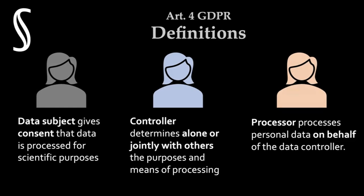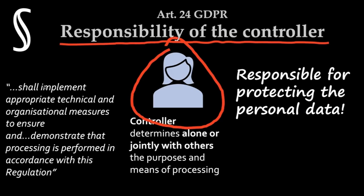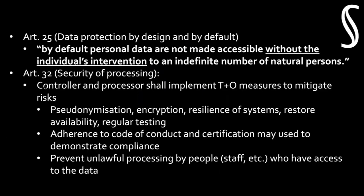As soon as you are a controller, you have certain responsibility under the law. The third role under GDPR is the processor, who just acts on the instruction of a controller. If you are working for a company and your boss tells you exactly what to do and you do exactly that, then you are the processor, not the controller. But if you are the controller, you have the largest share of responsibility for protecting personal data, and you shall implement appropriate technical and organizational measures to ensure processing is in accordance with GDPR.